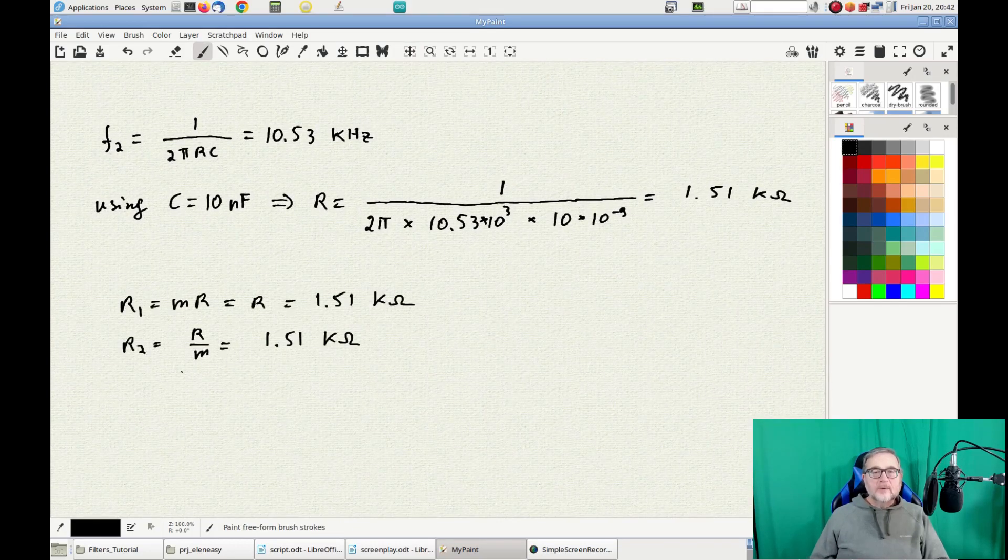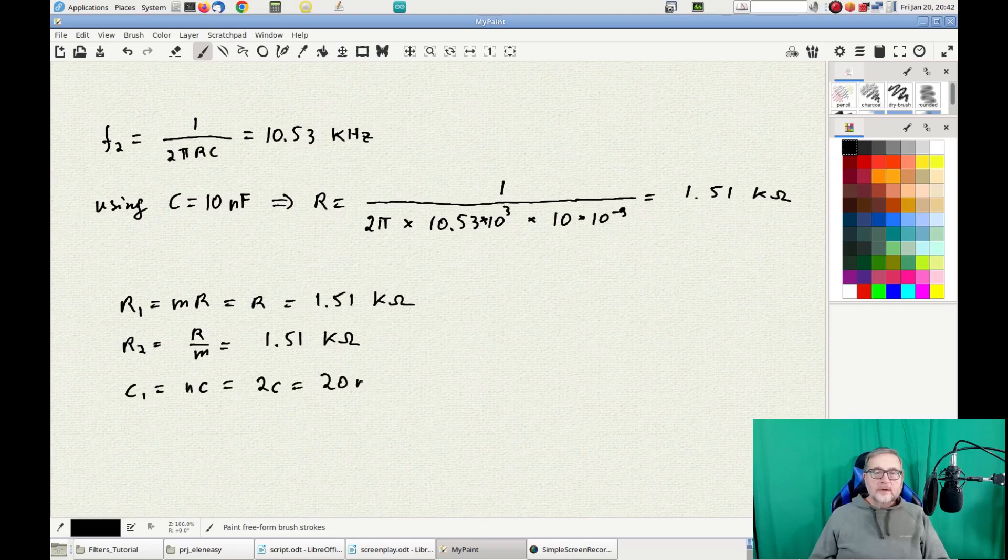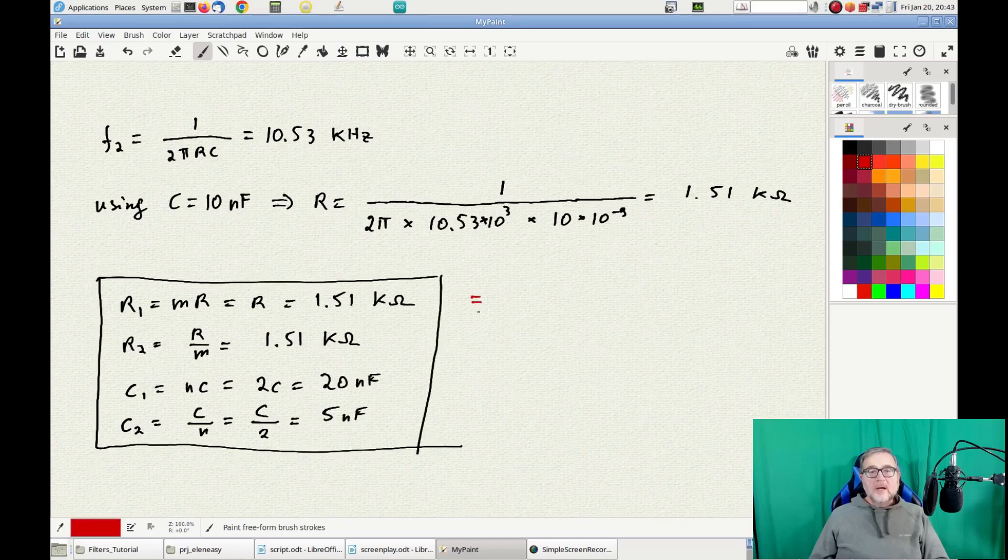R1 equals 1.5 kΩ, R2 equals 1.5 kΩ, C1 equals 22 nF, and C2 equals 4.7 nF.